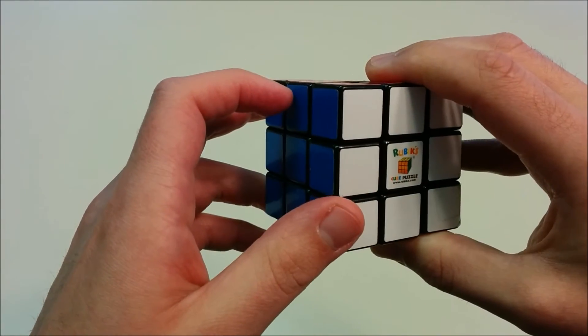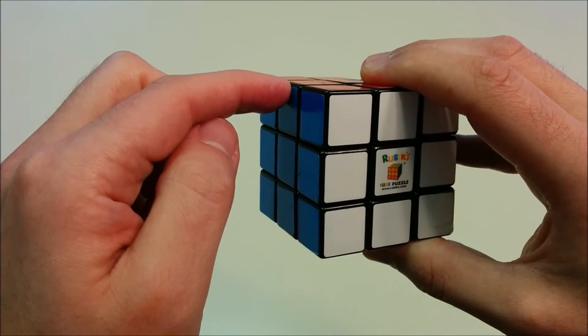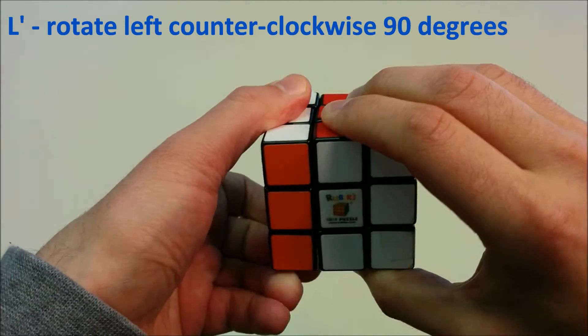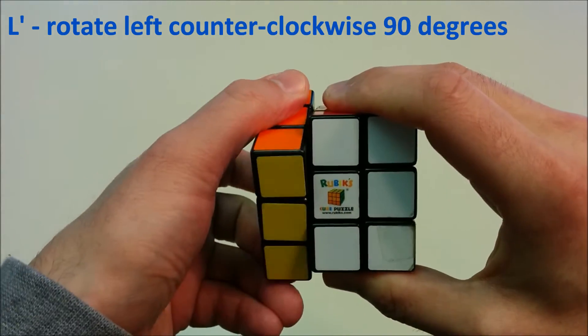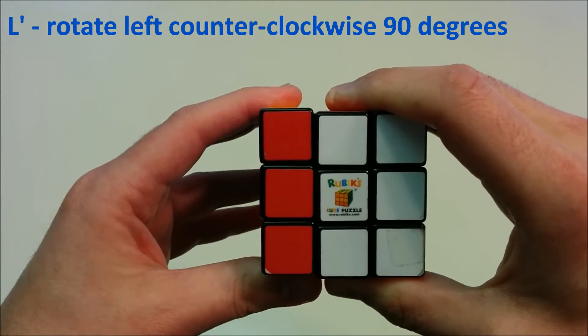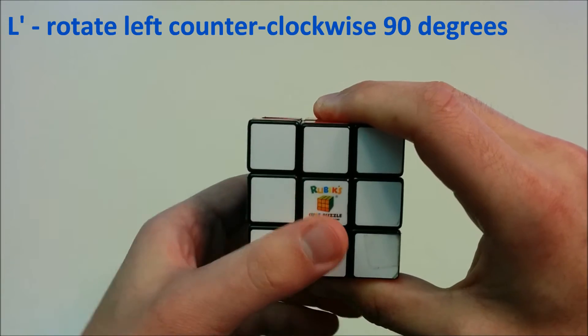So after repeatedly doing L four times, we get back to the original position. L prime is counter-clockwise. And we can repeatedly do that move to change the left side.